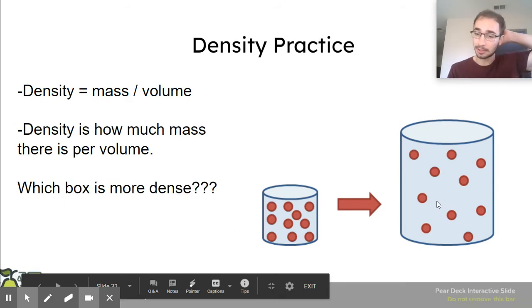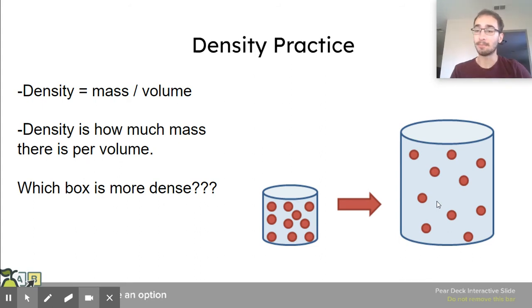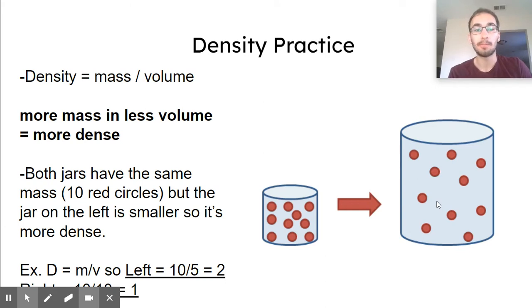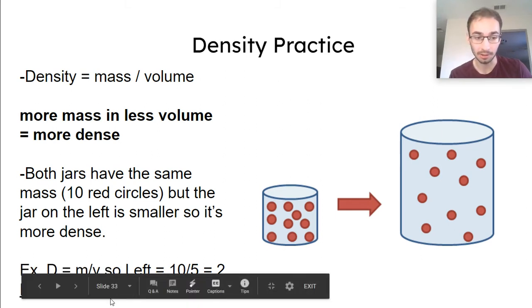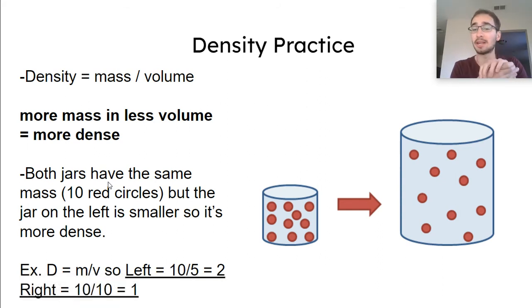Next I want you to compare these two jars. Which one is more dense? Try and pause the video now and think about it. You notice more mass and less volume equals more dense. So it's more compact. Both jars have the same amount of mass because they both have 10 of those red atoms. But the jar on the left is smaller. So it's more dense because it's more compact. Those little atoms are tighter packed together.